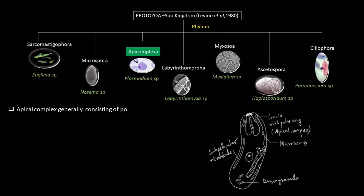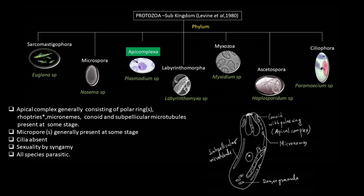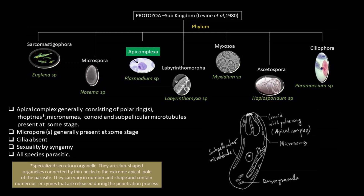Apicomplexa generally consisting of polar rings, rhoptries, micronemes, conoid, and sub-pellicular microtubules. Micropores generally present at some stage; cilia absent; sexuality by syngamy; all species are parasites. Rhoptries are actually specialized secretory organelles — club-shaped organelles connected by thin necks, as clearly evident in the pictorial presentation, to the extreme apical pole of the parasite. They can vary in number and shape and contain numerous enzymes that are released during the penetration process.